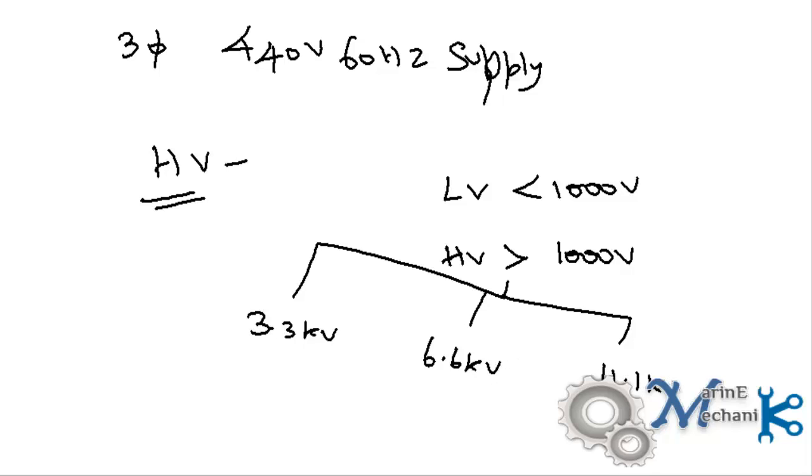We currently have three ranges of operation of high voltage: 3.3 kV, 6.6 kV, and 11 kV. 3.3 kV is the rarest to find on some container ships or specialized vessels like research ships, and 6.6 kV is used mostly by LNG ships.